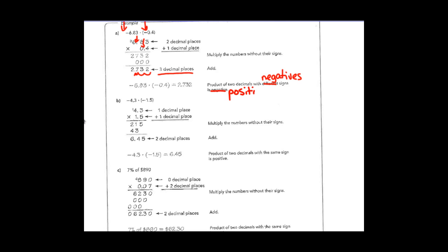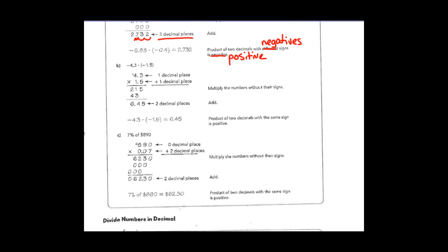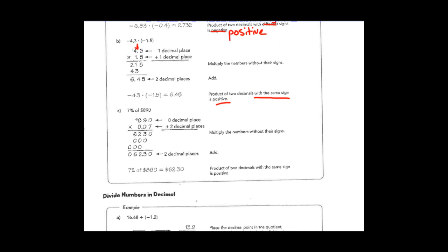In example B we're multiplying again — two negatives — and they did get that correct. Two negatives, same sign, gives a positive answer. We have three tenths and five tenths, and again it looks like they're lining up decimal points, but with multiplication you do not have to line up decimal points — that's only with adding and subtracting. Negative four and three tenths times negative one and five tenths gives you positive six and 45 hundredths.